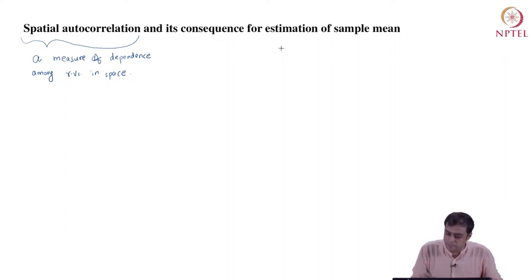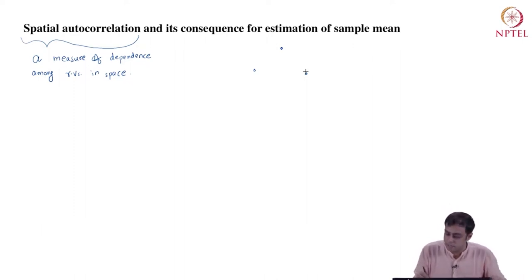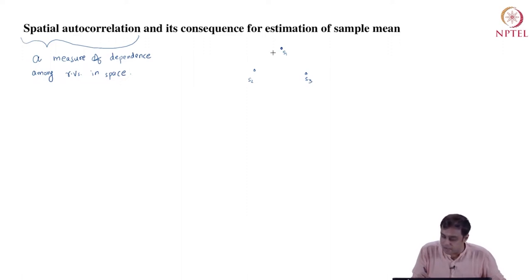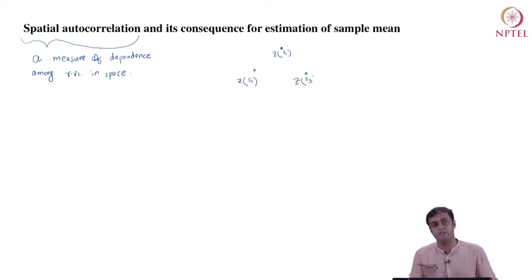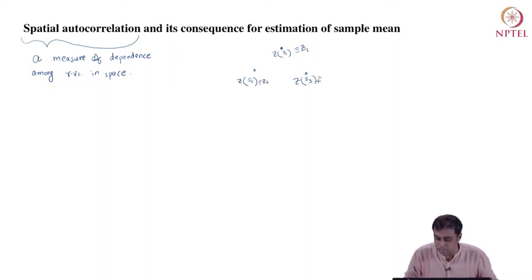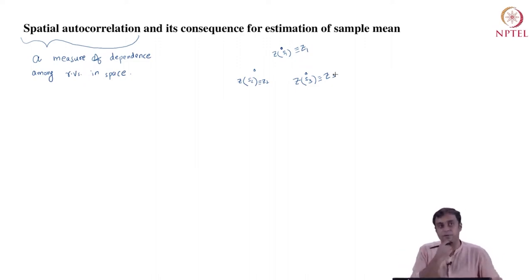To make our understanding slightly more clear, let us take a small example. Say we have random variable realizations for three locations in space: S1, S2, and S3. The random variable realized is given by Z. So ZS1 is the random variable realization at location S1, ZS2 is the realization at location S2, and ZS3 is similarly the realization at S3. We can also define these with simple indices Z1, Z2, and Z3, where the indices 1, 2, and 3 delineate the location.